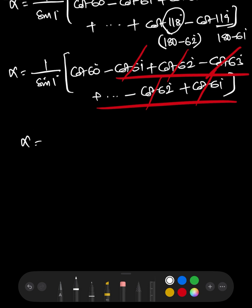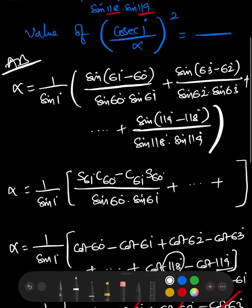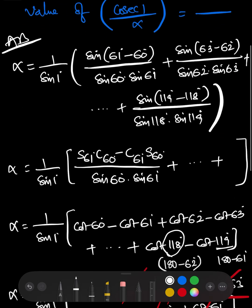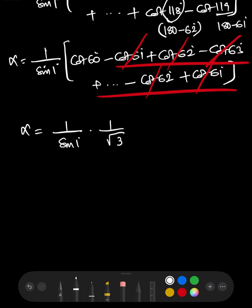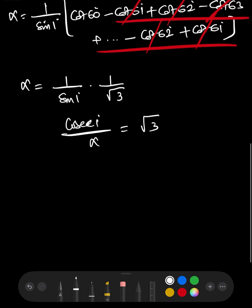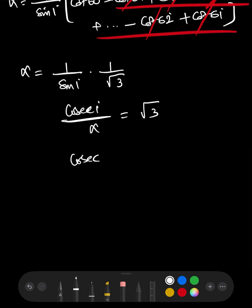What we are left with is clearly α = (1/sin 1°) · cot 60° = (1/sin 1°) · (1/√3). We want cosec(1°) / α, so cosec(1°) / α = √3, since 1/sin 1° is cosec 1°. Squaring both sides: cosec²(1°) / α² = 3.